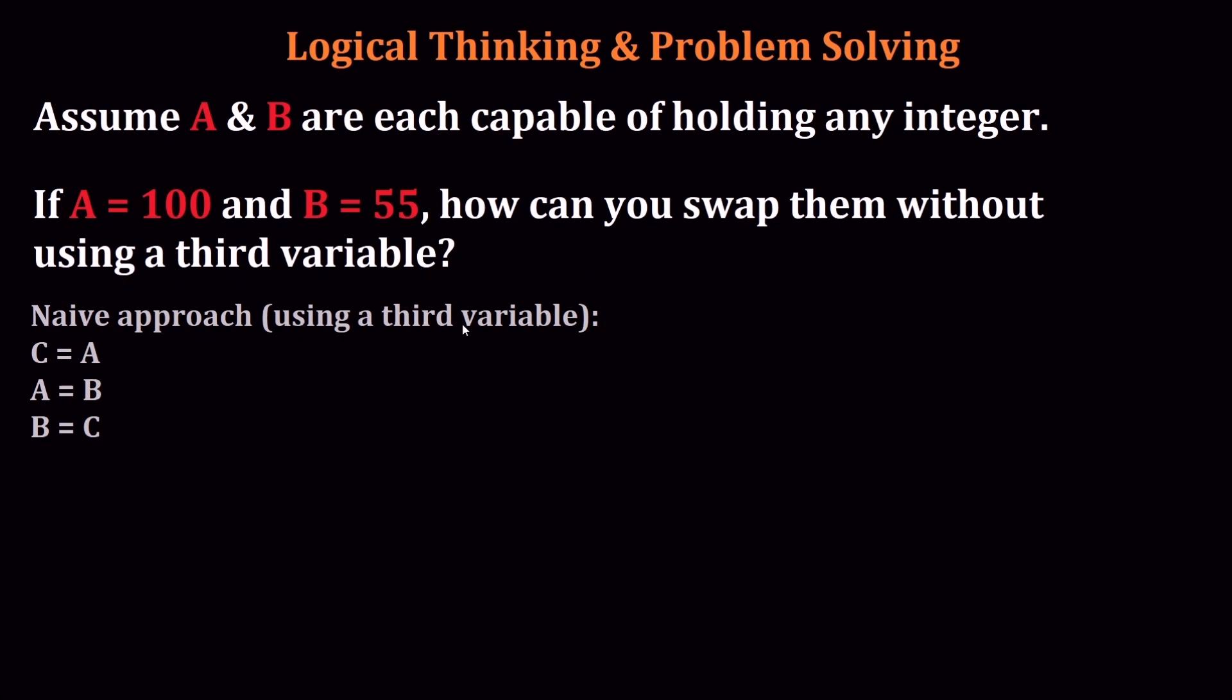How would you swap the two without using a third variable? In other words, a naive approach would be to use a third variable. You could have C = A, and then A = B, and then B = C. So by the time you get after the B = C, you've now swapped and A is going to be 55.